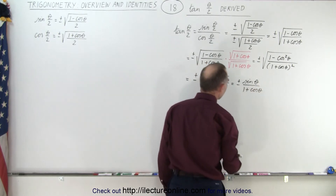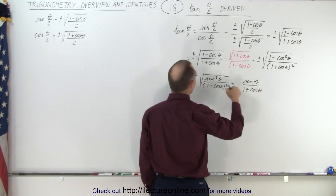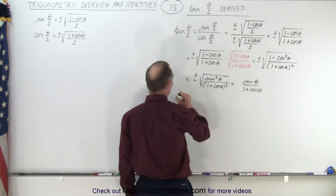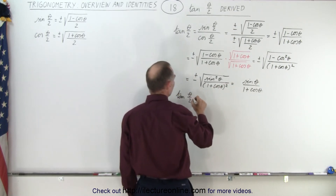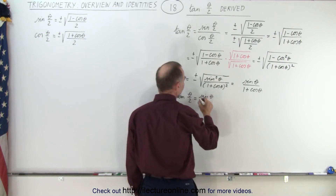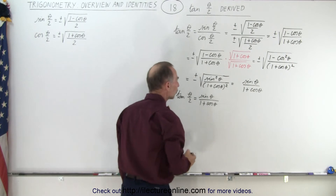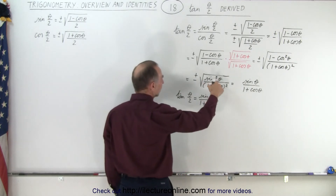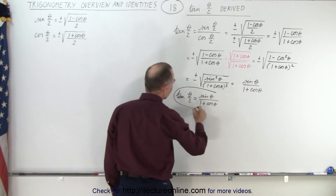Now, do we need the plus or minus? We can leave that out and simply say that the tangent of θ/2 is equal to sinθ divided by (1 plus cosθ). Since we squared everything inside the radical and then took the square root, we don't need the plus or minus, and so we can simply write it like this.